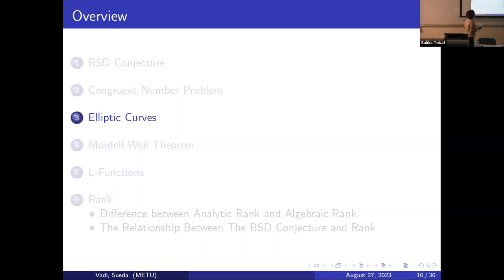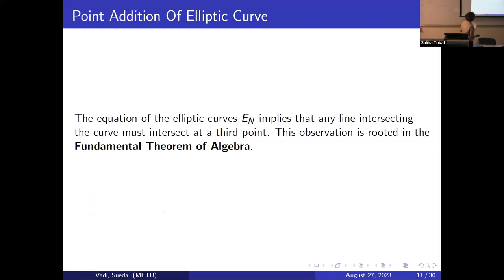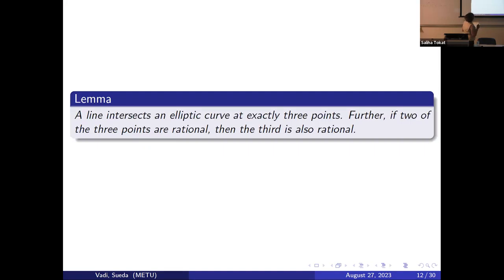Finally, we can get this statement: n is a congruent number if and only if there exists a rational point (x, y) on the elliptic curve with y not equal to zero. So we have a reason to investigate elliptic curves now, and while investigating this concept, we use two lemmas that were referred to this morning.